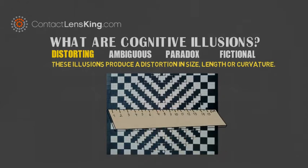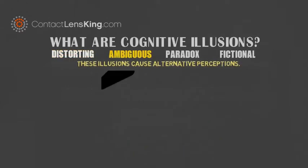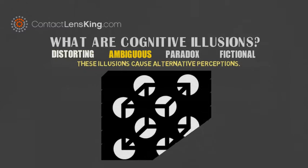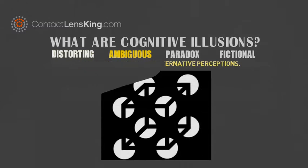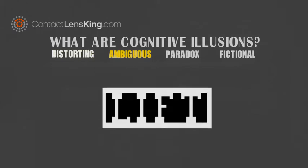The second category is ambiguous illusions. These illusions cause alternative perceptions. For example, can you see the cube in this image? Or in this image, do you see the blocks, or the word 'lift,' first?